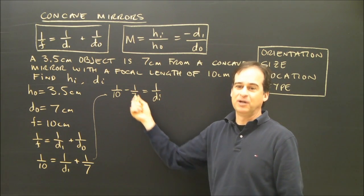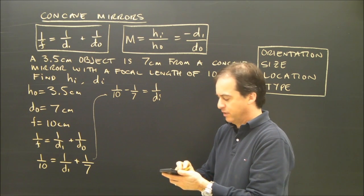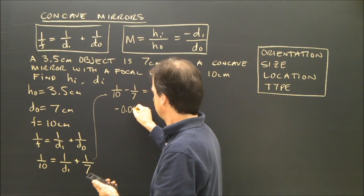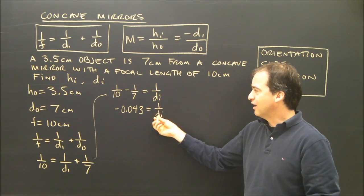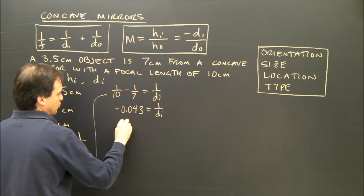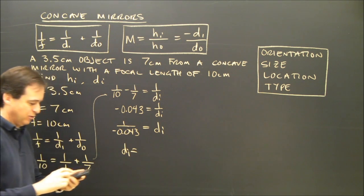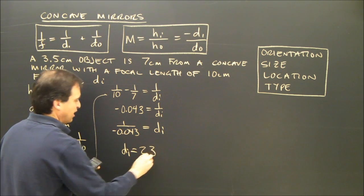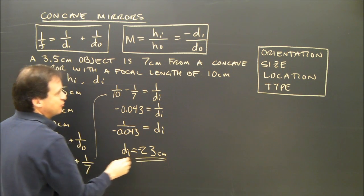I could find a common denominator, or you can use your calculator — it depends on your teacher. So 1 divided by 10 minus 1 divided by 7 equals negative 0.043 (rounded a little). Since 1 over di equals that number, I invert both sides: di equals 1 over negative 0.043, which equals approximately negative 23 centimeters.